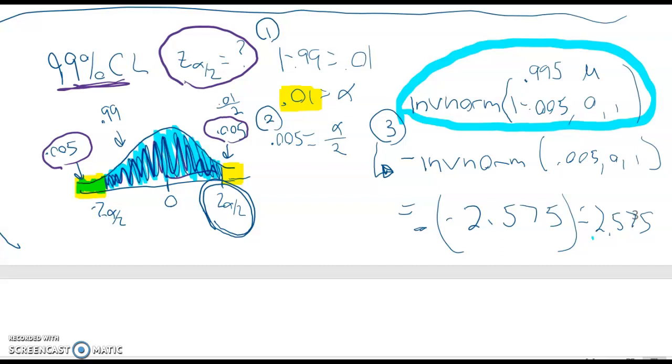Or alternately you can just say well this is a symmetrical distribution so negative of the critical value would be having an area of 0.005 to the left. So I can say negative the inverse norm of 0.005 comma 0 comma 1 and that gives me negative of negative 2.575 giving me that same answer in the end.